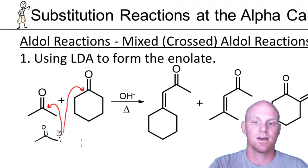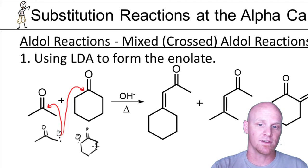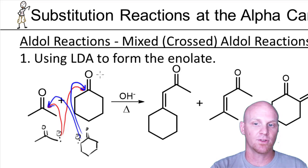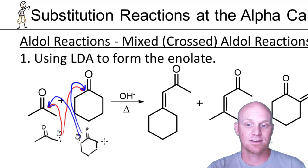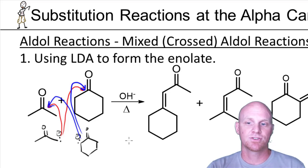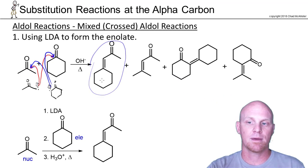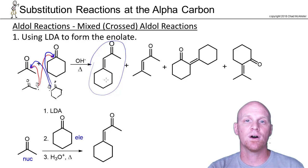The other option is you could deprotonate the alpha carbon of cyclohexanone and form its enolate — again only a very small amount. That enolate could then attack either the cyclohexanone left in solution or the acetone. Since they're both ketones, neither one is a better electrophile and neither is more acidic, so you get a fair amount of all four products. This is not a great route if your goal is simply to get just one specific product.